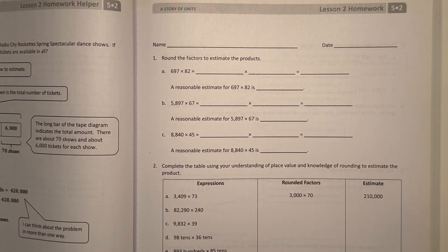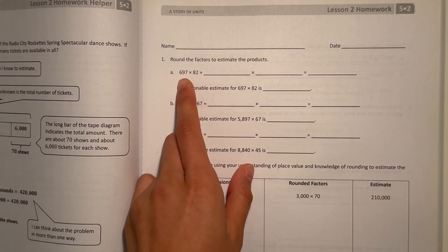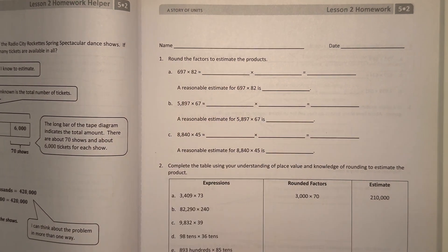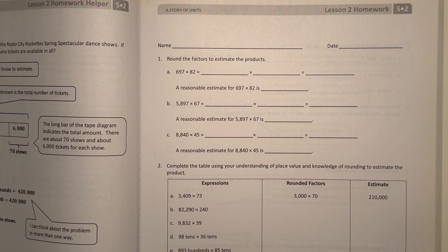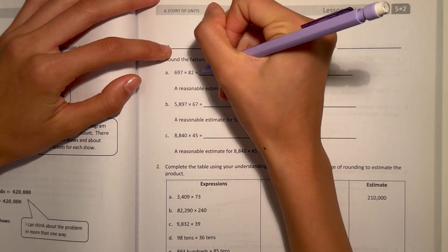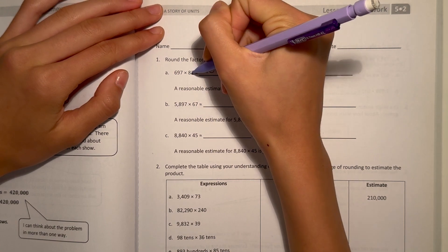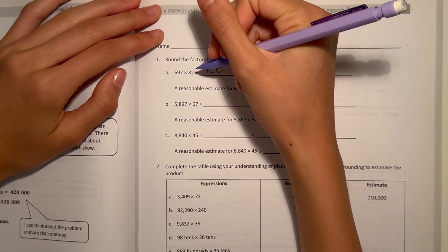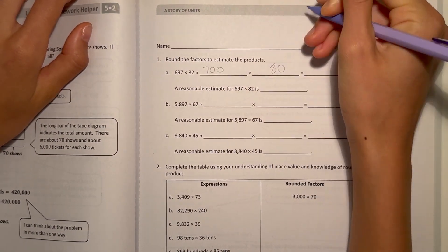Number 1, round the factors to estimate the products. One of the most important things when doing a math problem is understanding the problem itself. So we're trying to round the factors. A, we have 697 × 82. The biggest digit in 697 is 600, so we're rounding to the 100th place. That rounded to the 100th place would be 700. And then 82, the biggest digit place value is the 10th place, so we're rounding to the 10th place. That would be 80. That's 700 × 80.